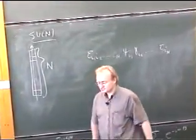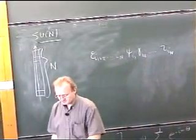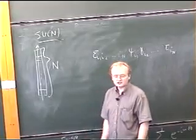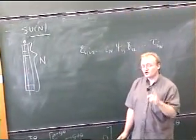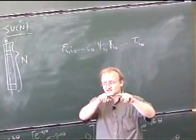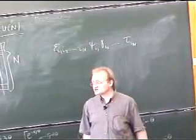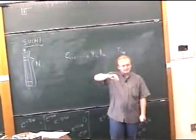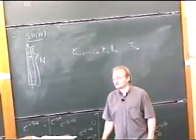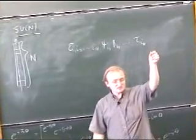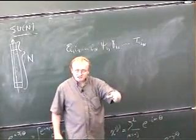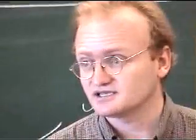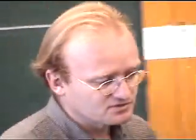There are rules to calculate the dimension of one of these representations. If you just have n boxes in a row, you're counting tensors with that many indices perfectly symmetrized, each index taking on N values. If the boxes are in a column, the tensor is anti-symmetric amongst all those indices. You can check these two cases of the rule.